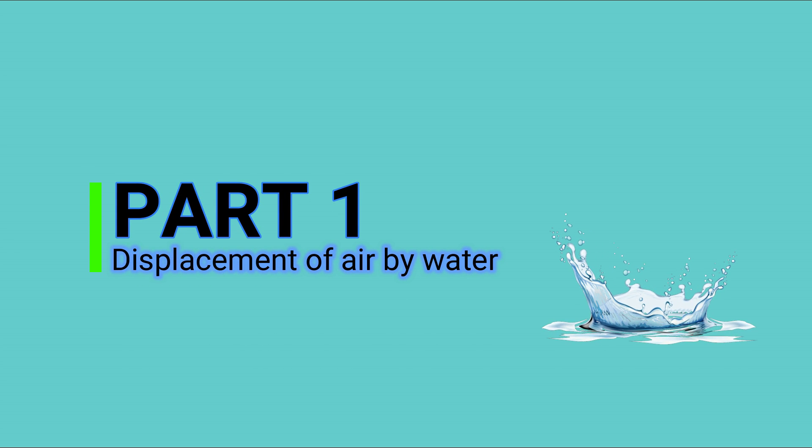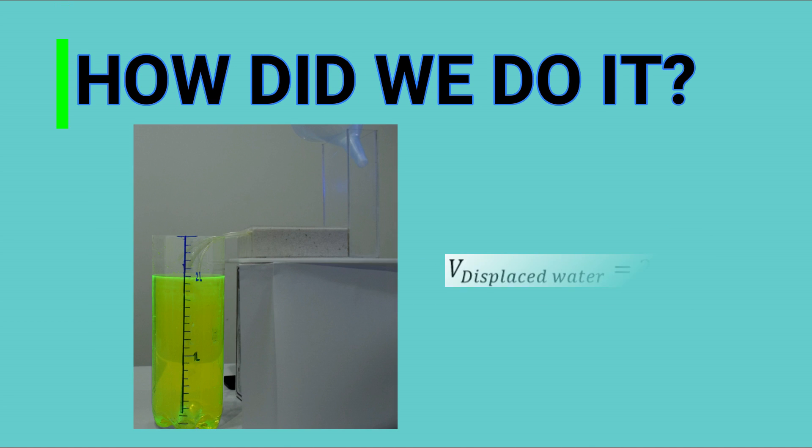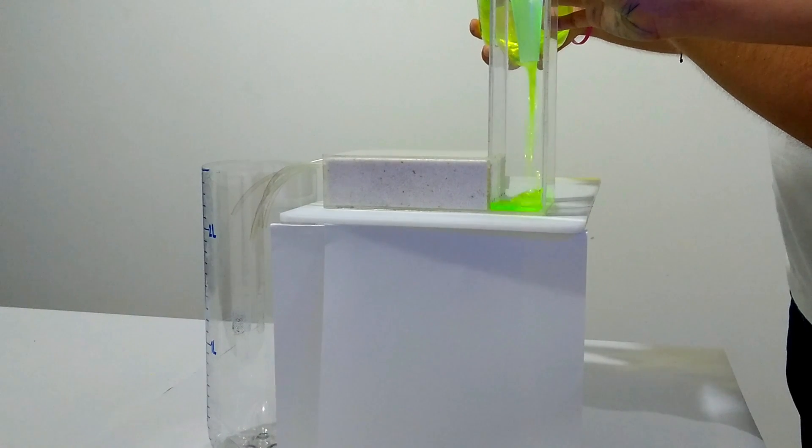Part number one: displacement of air by water. The objective is to quantify the system porosity. How did we do it? We injected 2000 cubic centimeters of water in the porous medium for reaching a water saturation of 100% and recreate the first reservoir days.